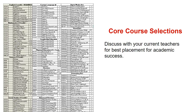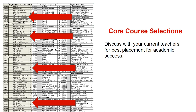Course selections in English, Math, Science, and Social Studies follow a progression. You will work with your current content area teacher to provide a recommendation and selection for those courses for next school year. Please keep in mind that we will consider your current academic performance, previous test scores, and your academic history when determining the best placement for your academic success. It is important for you to speak with your current content area teacher regarding these selections.